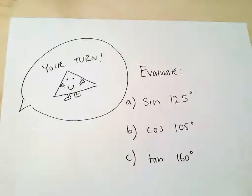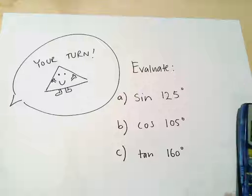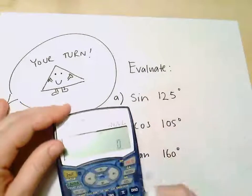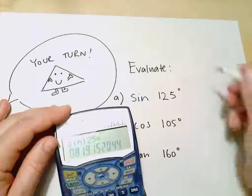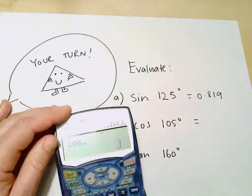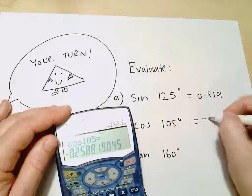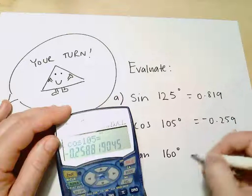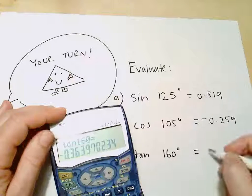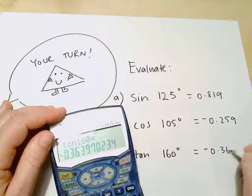Here's your second question to have a go at. Sine 125 gives 0.819. Cos 105 gives negative 0.259. And tan of 160 — everything's just plugged in exactly as normal here, so nothing too tricky.